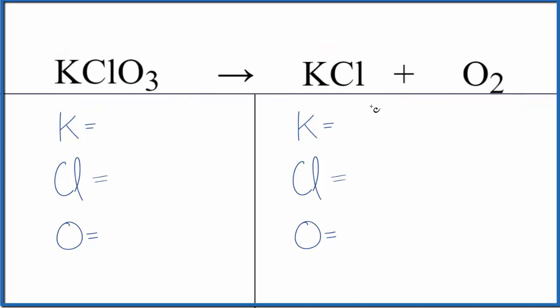Let's balance the equation. We have one potassium, one chlorine, and three oxygen atoms in the reactants. In the products we have one potassium, one chlorine, and two oxygen atoms.